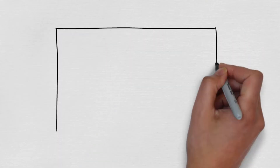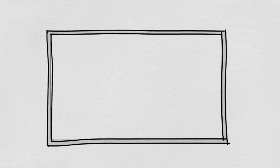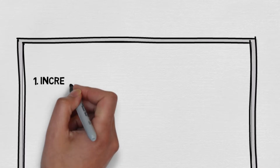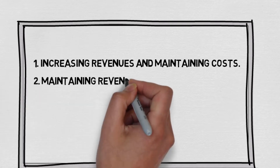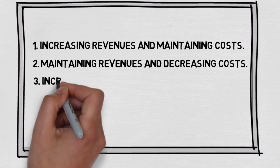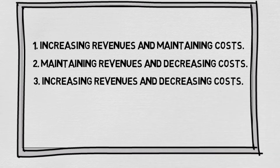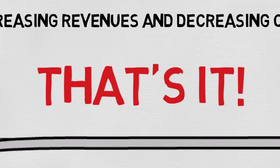Let me give you this example of the simple way of looking at your profits. Those three simple ways of improving your profits: you can improve profits by one, increasing the revenues of your business while maintaining costs; two, maintaining the revenue of your business whilst decreasing the costs; and three, best of all, increase the revenues of your business whilst decreasing the costs. That's the simple way.